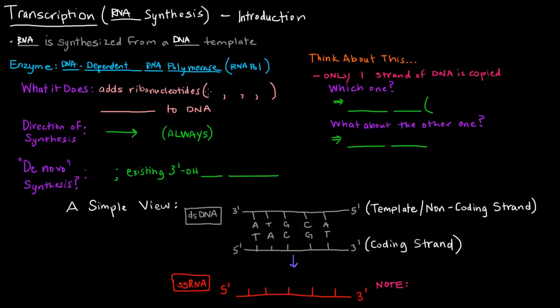Well it adds the ribonucleotides, which are ATP, UTP, CTP, and GTP, to make a strand of RNA that is complementary to DNA.